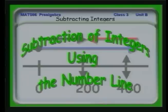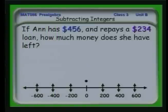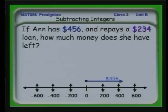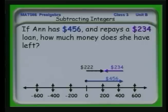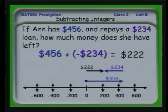Let's recast this problem into the idea of using integers on the number line. If Ann has $456 and repays a $234 loan, the loan is effectively a negative number. So we would go 234 units to the left, which leaves us with 222. We can see that this is equivalent to adding the quantity minus 234 to the original 456.